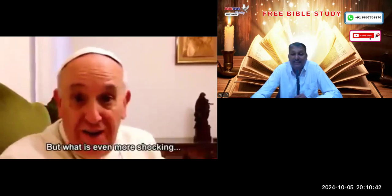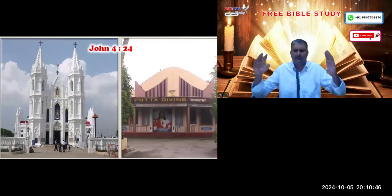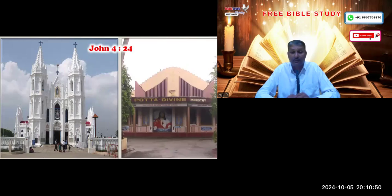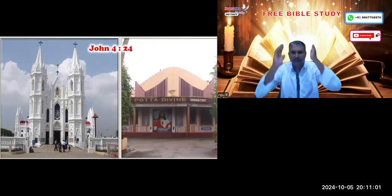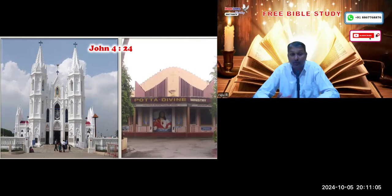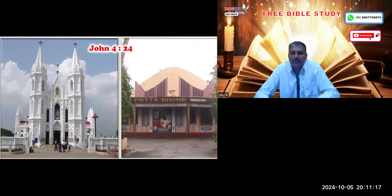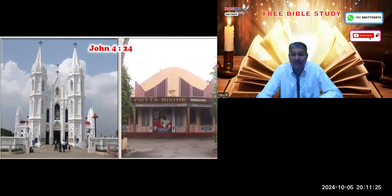This is clear proof that they have changed the times and laws. They constructed various religious places — Vatican City, Velankanni and Potta in India — where Catholics must visit at least once in their lifetime, shaving their heads in offering. But Jesus told the Samaritan woman that true worshippers must worship God in truth and spirit — there is no need to go here and there. This is how they change the times and seasons.